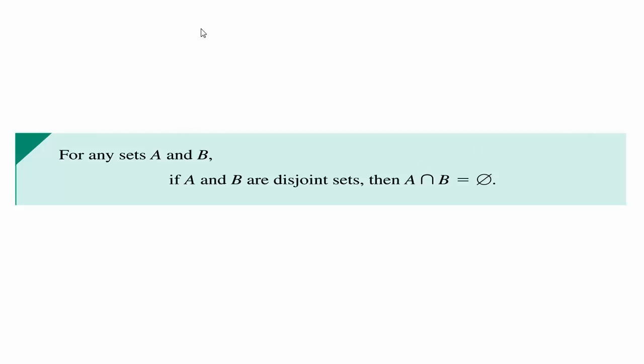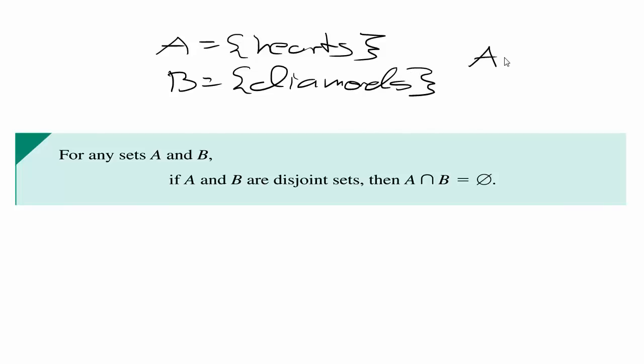Think of it as something like if you know anything about a deck of cards let A be the set of all of the cards that have hearts on them and let B be the set of all cards that have diamonds on them. We know that if we take the overlap the intersection of those two sets because they are disjoint they are going to be the empty set.